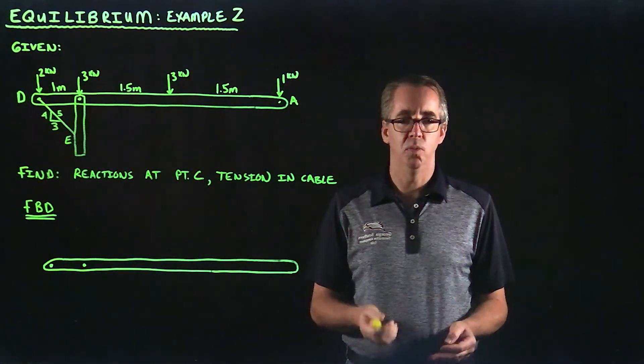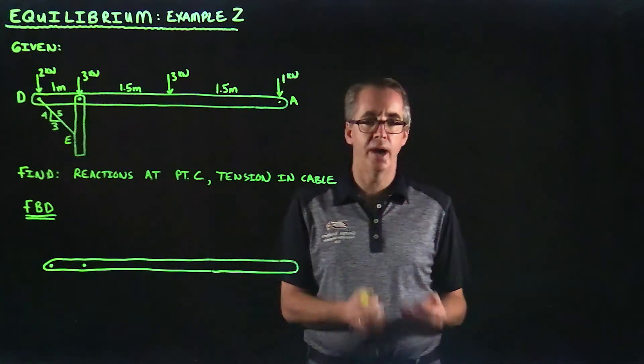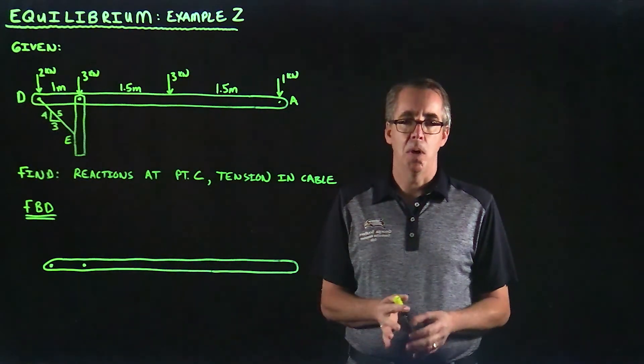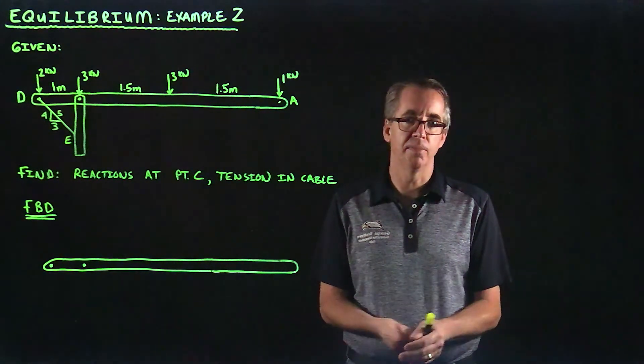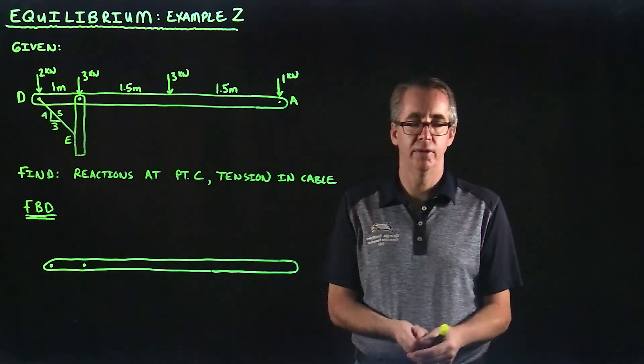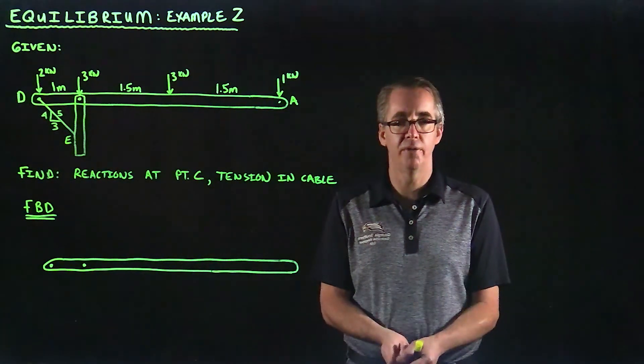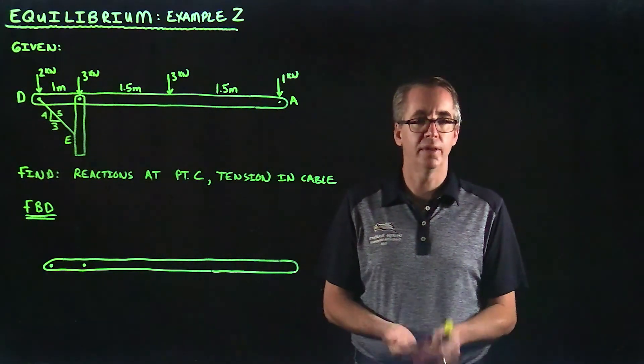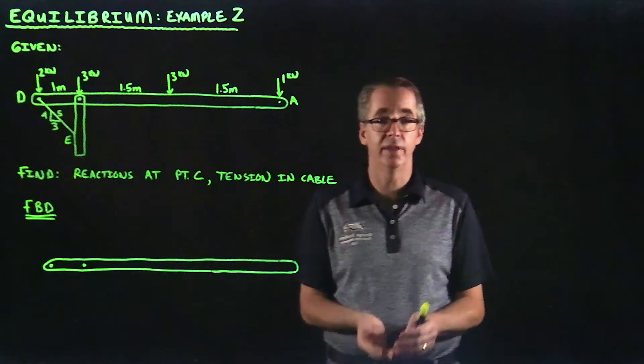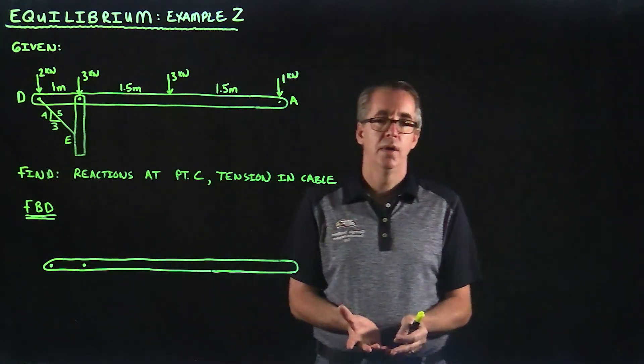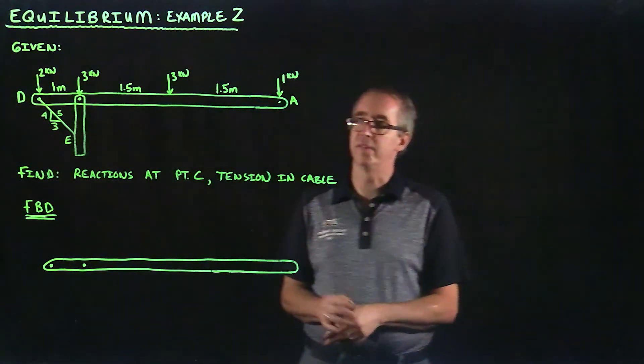This is our second example with equilibrium. Recall that when an object is in equilibrium, there are three conditions that exist. You can sum the forces in the x direction and they're equal to zero. You can sum the forces in the y direction and they're equal to zero. And you can take the moment at any point along that object, and that will also equal zero. Let's go ahead and move forward with this example.